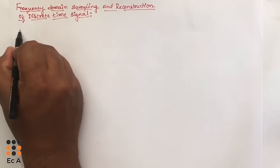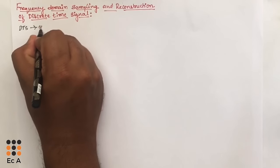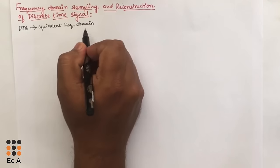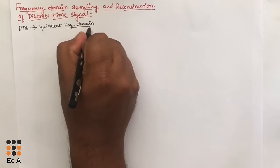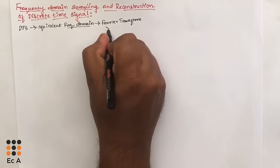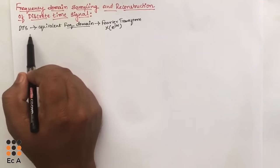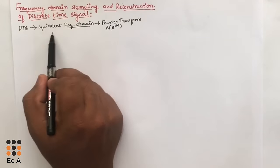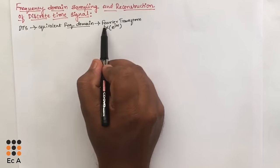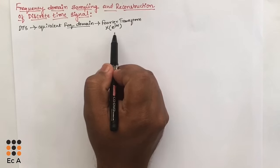To analyze a discrete time signal, it should be converted into an equivalent frequency domain representation. This equivalent frequency domain representation is known as the Fourier transform, which is represented as x of e to the power of j omega.